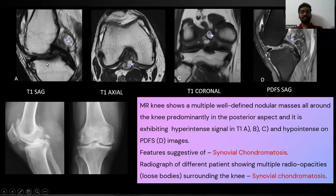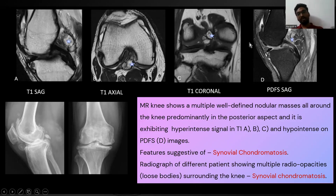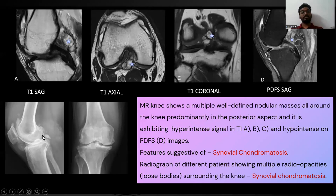In our case, on T1 sagittal, T1 axial, and T1 coronal, a hyperintense mass is seen all around the knee joint, with a larger one predominantly in the posterior aspect. On PDFS, hypointense signal is seen, suggestive of synovial chondromatosis. Another patient's images show multiple loose bodies in the knee, suggestive of osteochondromatosis.